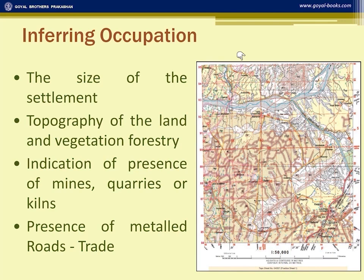In the case of a quarry, people work in the stone quarry. If there is a post office or telegraph office, people work there. If there is a forest, people are engaged in forestry or wood collection. The presence of mines, quarries, kilns, or a metal road indicates trade and mining activities.